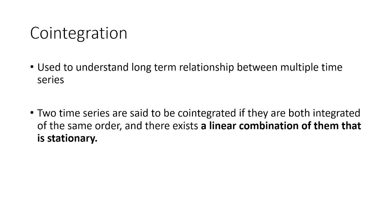The minimum is two variables, but it could be more. Two time series are said to be co-integrated if they are integrated to the same order and there exists a linear combination of them which is stationary. It might sound complex, but I can break it down in simple words.